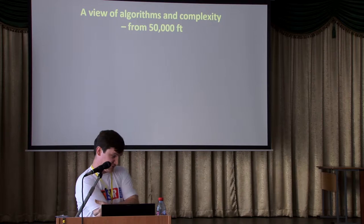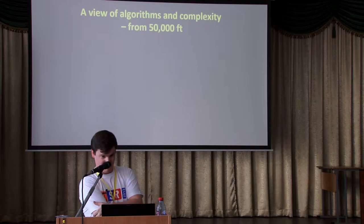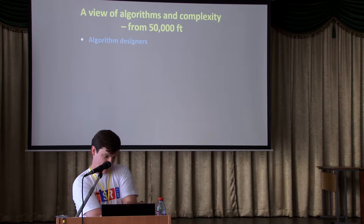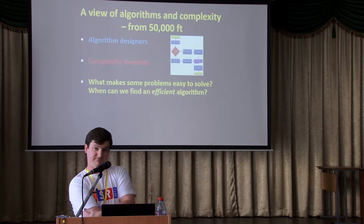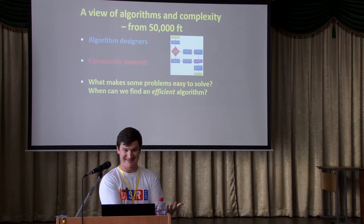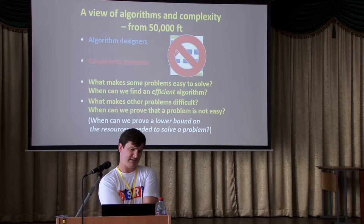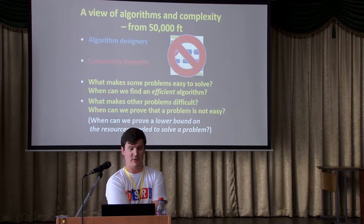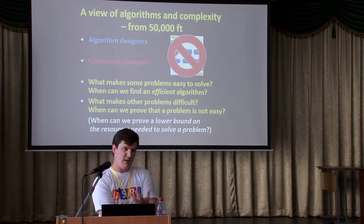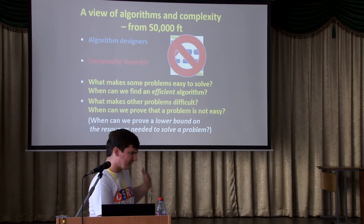Let's start at the very beginning and recall the traditional view of algorithms and complexity theory — the view from 50,000 feet. We have two camps of people: algorithm designers and complexity theorists. Algorithm designers generally ask what makes some problems easy to solve, and when can I find an efficient algorithm for some problem. Complexity theorists want to know about the intrinsic difficulty of problems — what makes problems difficult, and when can we prove that a problem is not easy.